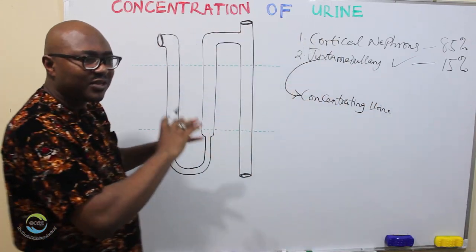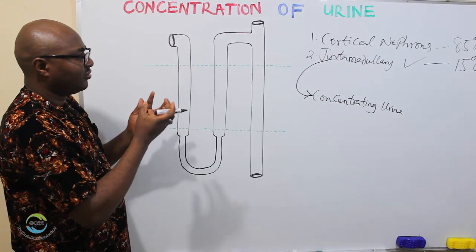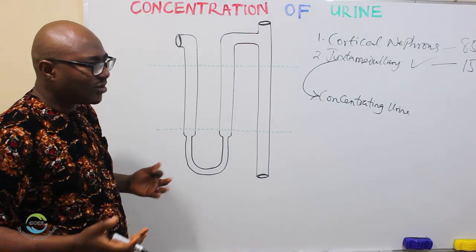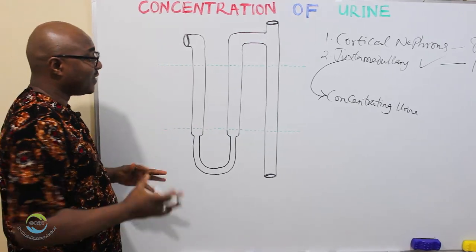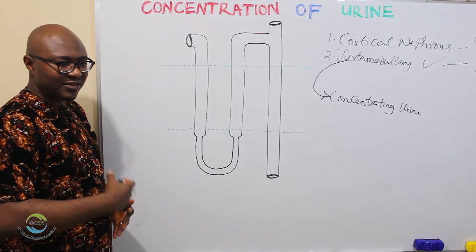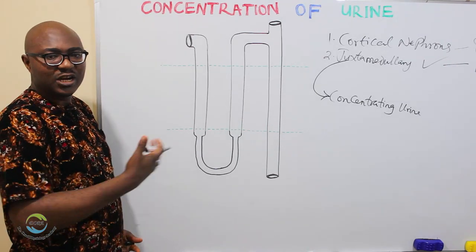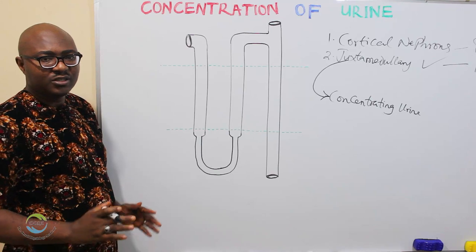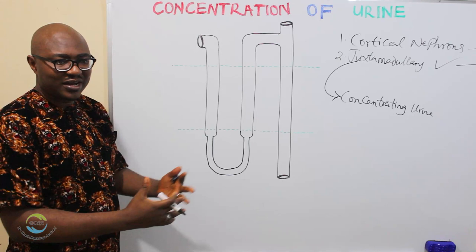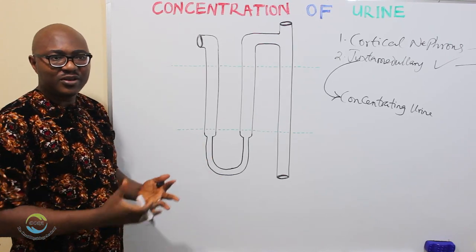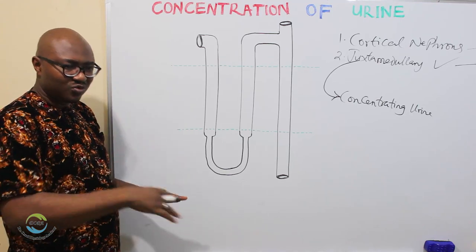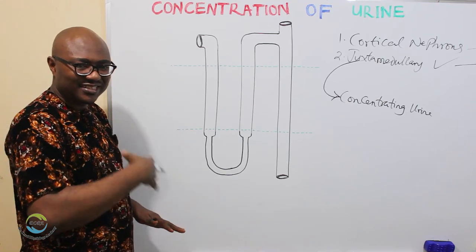Only 15% are juxtamedullary because concentrating urine is not the expected outcome — you're supposed to be taking in water. But in some situations, maybe you find yourself in a place where there is no water. The body cannot keep excreting dilute urine, so it needs to conserve water until you are in an environment where you have enough water to take in. Then it goes back to normal.